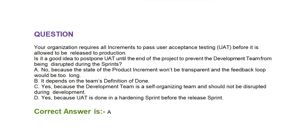Next question: your organization requires all increments to pass user acceptance testing (UAT) before being released to production. Is it a good idea to postpone UAT until the end of the project to prevent the development team from being disrupted during the sprints? Option A: no, because the state of the product increment won't be transparent and the feedback loop would be too long. Option B: it depends on the team's definition of done. Option C: yes, because the development team is self-organizing and should not be disrupted during development. Option D: yes, because UAT is done in a hardening sprint before the release sprint.